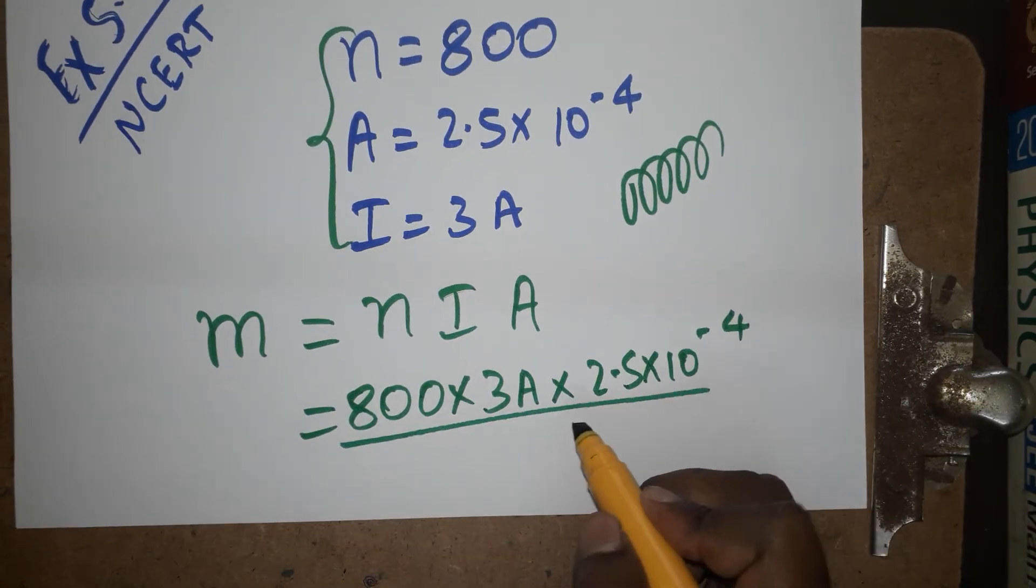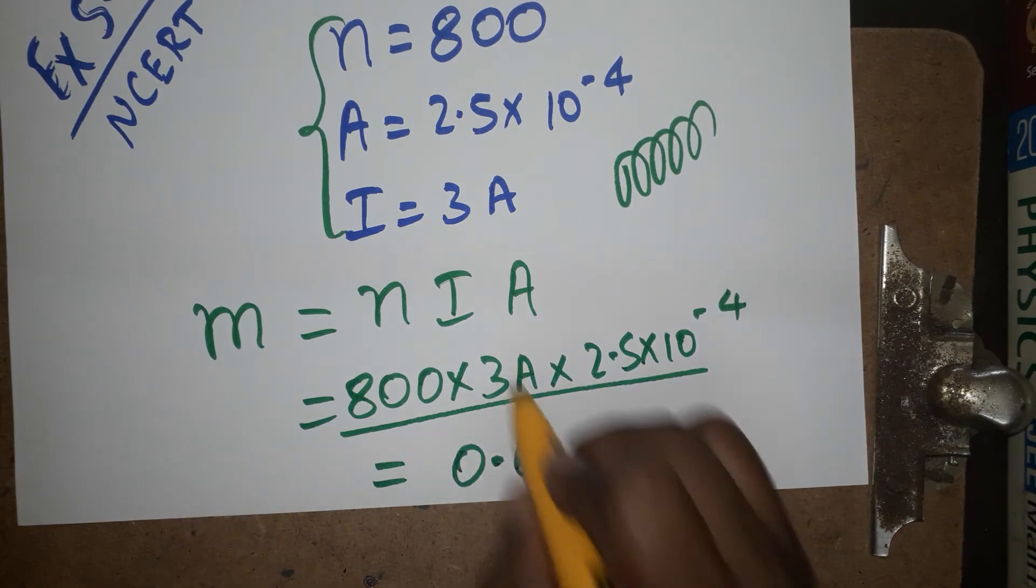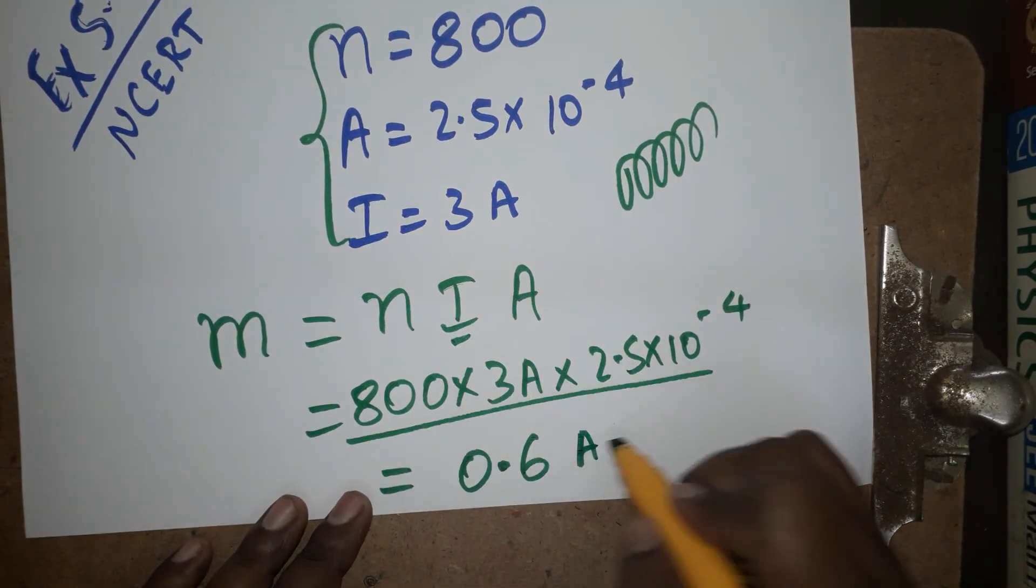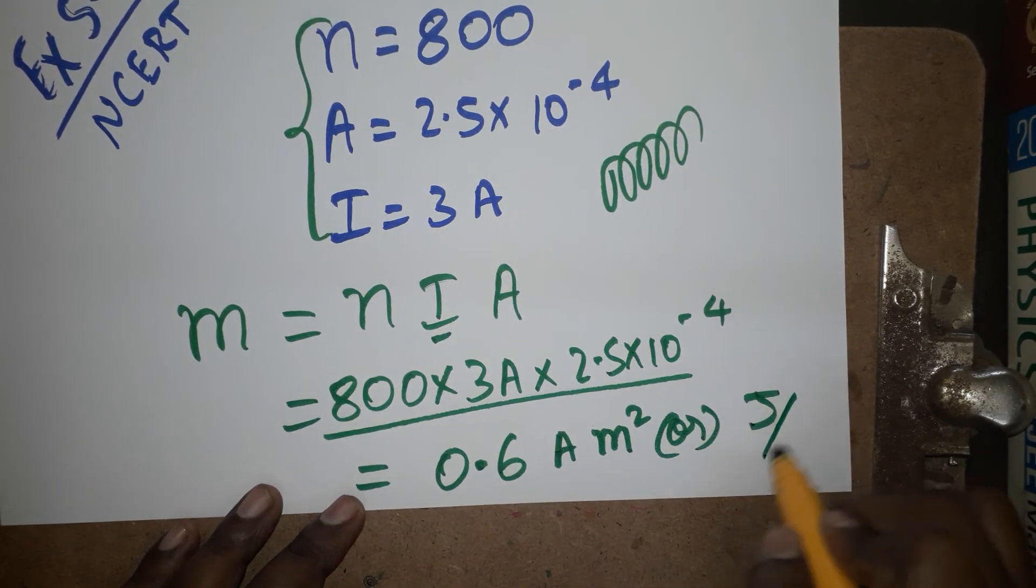Now what is the unit? Current is ampere, area is meter square. You can write ampere meter square. Otherwise you can relate with joule per tesla also, because U is equal to m B cosine theta.